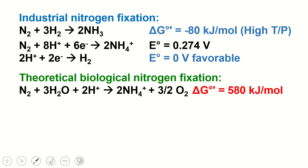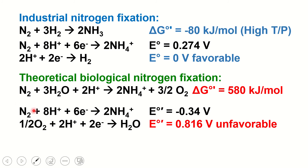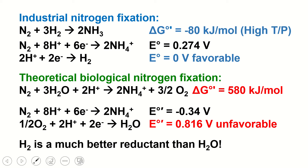This changes under the biological situation. The reduction of nitrogen becomes much more negative under the biological system — the standard biological reduction potential for the reduction of nitrogen to ammonia is negative 0.34 volts. And then on top of it, the reduction potential of oxygen to water is 0.816 volts. So combining these two reductions would actually promote the reduction of oxygen to water, but what we need is the opposite direction — for water to reduce nitrogen. H2 is a much better reductant than water.